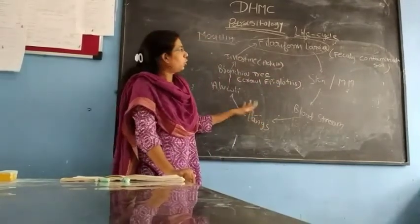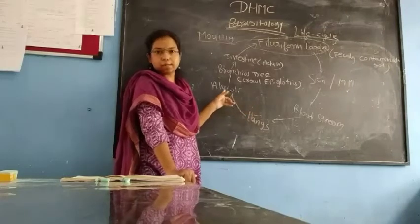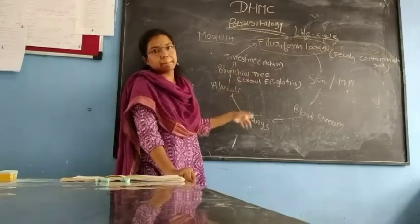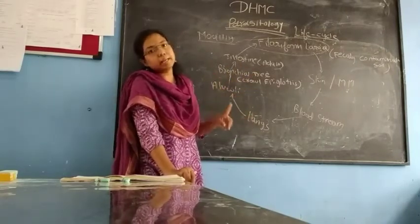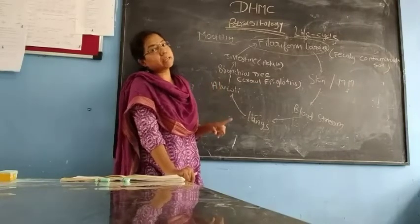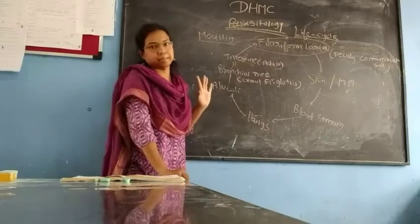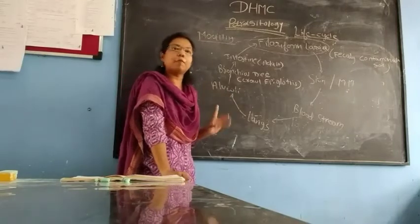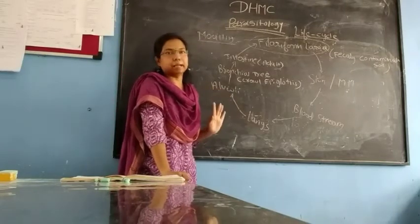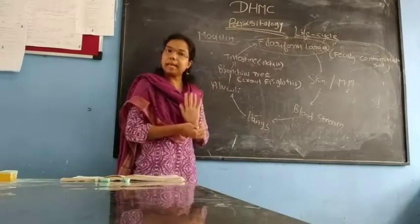In this way the life cycle of S. stercoralis continues. This is a very simple life cycle — the whole process takes place in only one host, the human being. So the life cycle of S. stercoralis is a simple life cycle because it involves only one host.